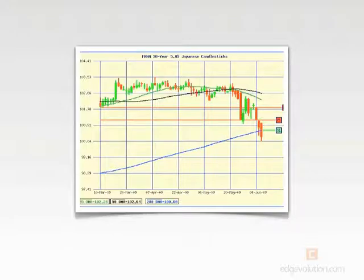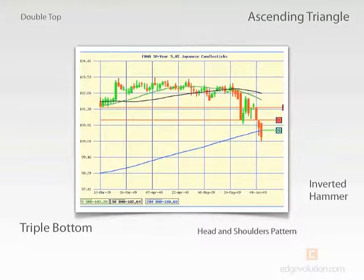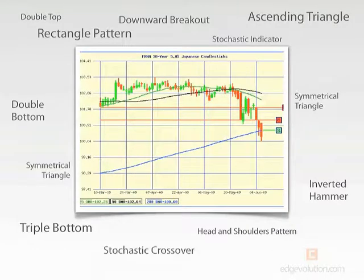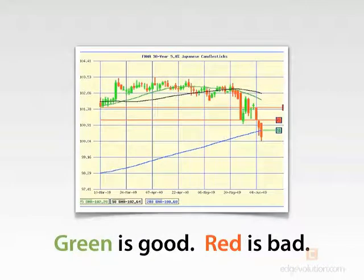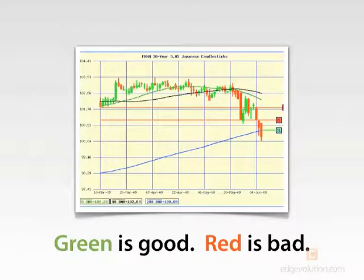We use these charts to predict and look for patterns in bond price movements. These patterns have all kinds of different names, like downward breakout, double bottom, and inverted hammer. But we'll make it simple: green is good and red is bad. Anytime you see green on this chart, it means bond prices are going up and mortgage rates are coming down. Conversely, when you see red, it means bond prices are dropping and mortgage rates are going up.